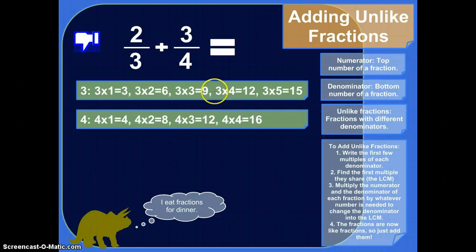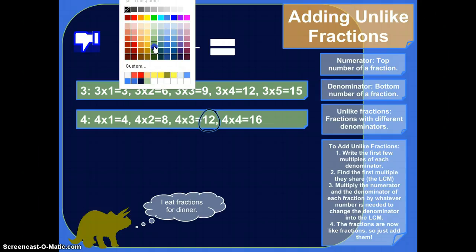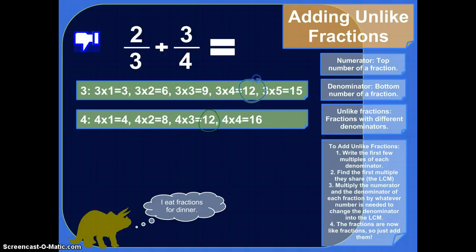So the least one they have in common. So three and four are not the same. Six and eight are not the same. Here we go. Twelve. Twelve and twelve. Twelve is the first multiple that three and four share in common. So we're going to make twelve our new denominator for each fraction. So we need to turn three into twelve and four into twelve.